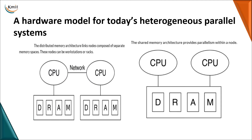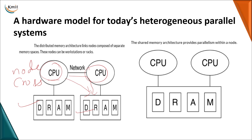In distributed memory architecture, you have multiple CPUs and each CPU has its own memory — each can store data and perform operations, and they can transfer data over a network. This is also called cross-node, because if one CPU requires data present in another CPU, it can use the network to get it. In shared memory architecture, there is only one memory that multiple CPUs share — this is called on-node, as all CPUs use the same memory.